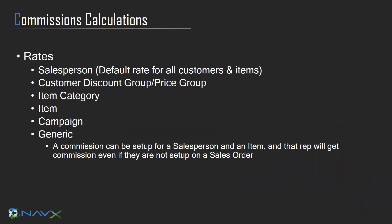The rates can be constructed as a default rate for all customers and items by rep. They can be set by a customer discount group or price group, item category, item, campaign, or a generic commission for all reps and items.